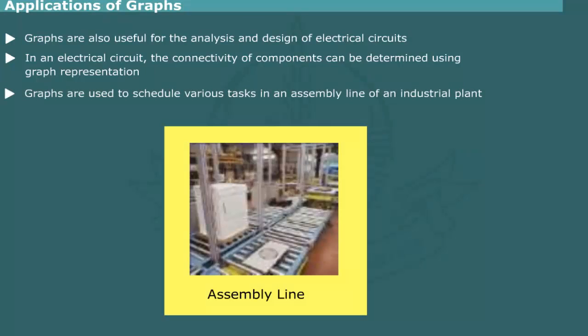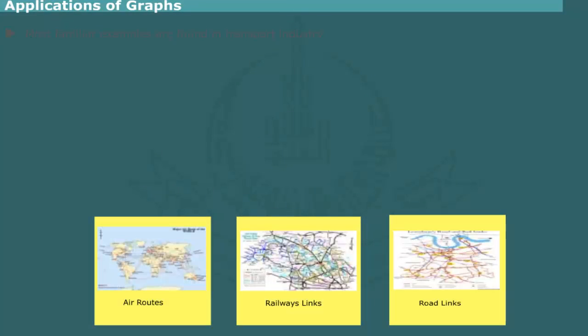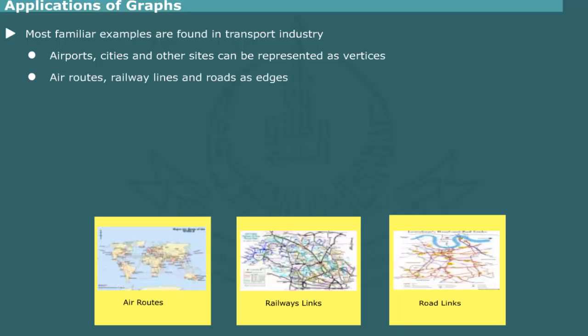Graphs are also useful to schedule various tasks in an assembly line of an industrial plant when certain tasks must be completed before the next task is started. The most familiar examples of graphs are found in transport industry. For example, airports, cities, and other sites can be represented as vertices and the air routes, railway lines, and roads as edges.